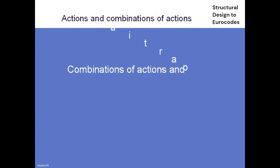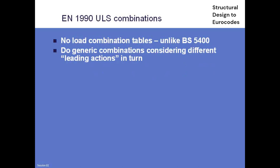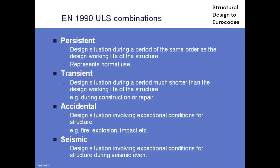So out of all that, it's only really the traffic loading that is significantly different. What we need to do now is combinations, and this is very different for those of you who haven't seen it. We haven't got any load combination tables — all you have is some formulae, and you have to apply generic formulae in turn until you get the worst overall answer. But what we're actually doing is the same as you were doing in the load combination table. There are four generic ULS combinations: persistent, transient, accidental, and seismic.